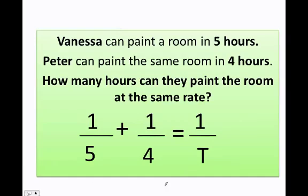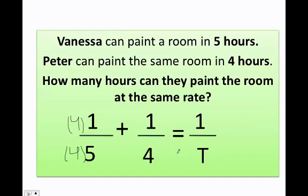Let's do it. I have one-fifth plus one-fourth. I need to add one-fifth plus one-fourth. Do I have the same denominator? Anytime you have a fraction, you need to have the same denominator. Since I don't, I need to multiply this fraction by four over four, and I have to multiply this fraction by five over five.